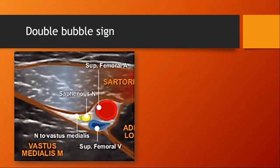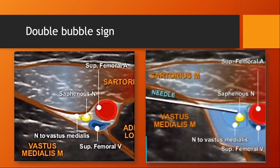When drug is injected after piercing the adductor membrane, it often produces the appearance of a double bubble sign — two distinct anechoic collections. When this sign is present, it represents ideal drug placement. However, it is not always possible to obtain this picture on ultrasound.